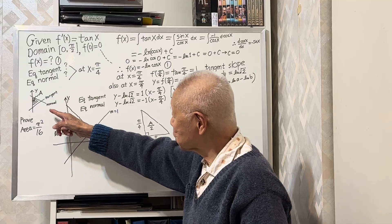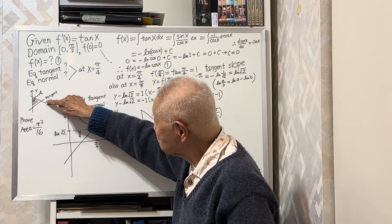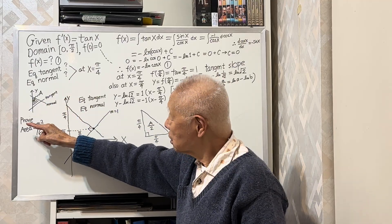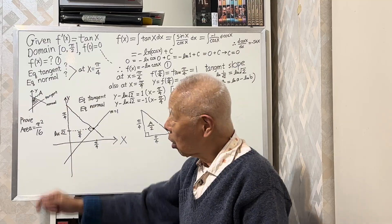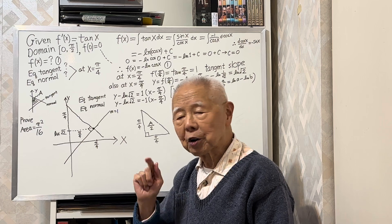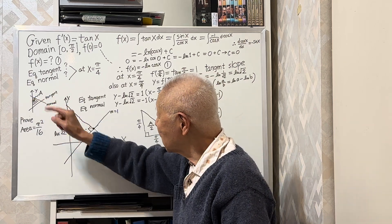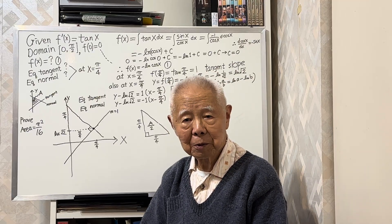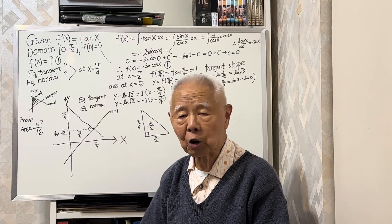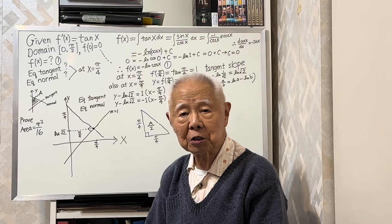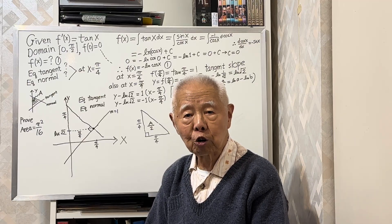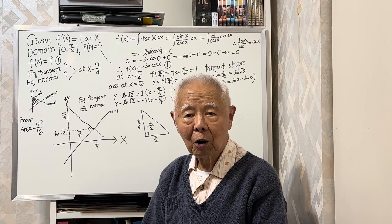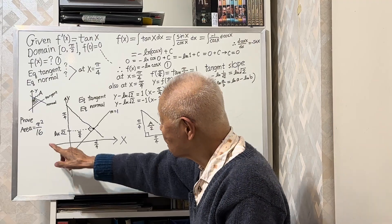The situation is like this: a point is given, and passing through this point you draw a tangent. Also passing through the same point you draw a normal. The tangent line, the normal line, and the y-axis enclose a triangle. The question asks you to prove that the area of the triangle is pi squared over 16.